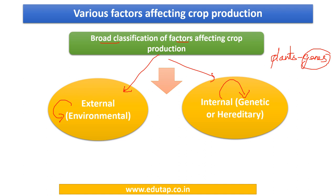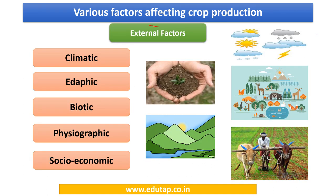Now let us look at the various external factors that affect crop production. They are climatic, edaphic, biotic, physiographic, and socioeconomic. Climatic factors include temperature, rainfall, relative humidity, atmospheric gases, and precipitation. These factors are very important because more than 50% of a crop's yield is actually dependent upon the climatic conditions in which it is grown. Edaphic factors refer to the soil characteristics on which the crop is grown, and are also a very important factor.